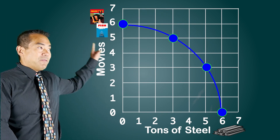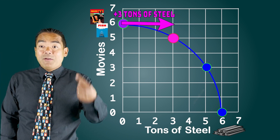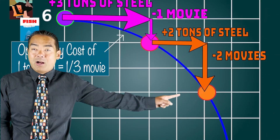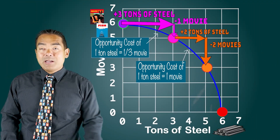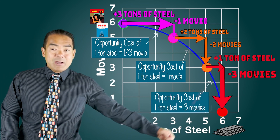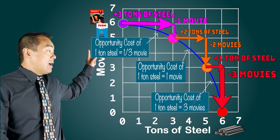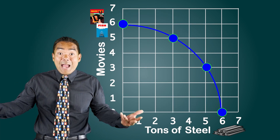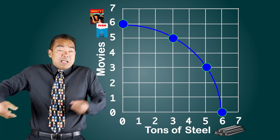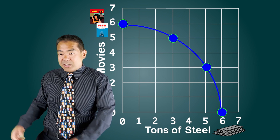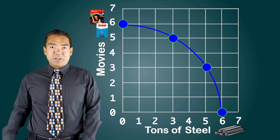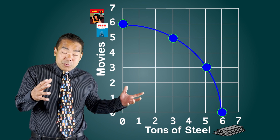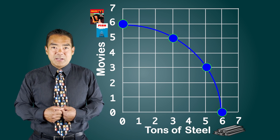It works the same going the other way. Going from six movies to the next point, we gain three tons of steel and only give up one movie — the opportunity cost of one ton of steel is just one-third of a movie. As we produce more steel, the opportunity cost of one more ton of steel rises to one movie, and finally to three movies. Opportunity cost is increasing as we move along the production possibilities frontier because the factors of production are now differentiated — some are good at steel, some at movies. As factors better suited to a good become scarce, the opportunity cost of producing more of that good increases.